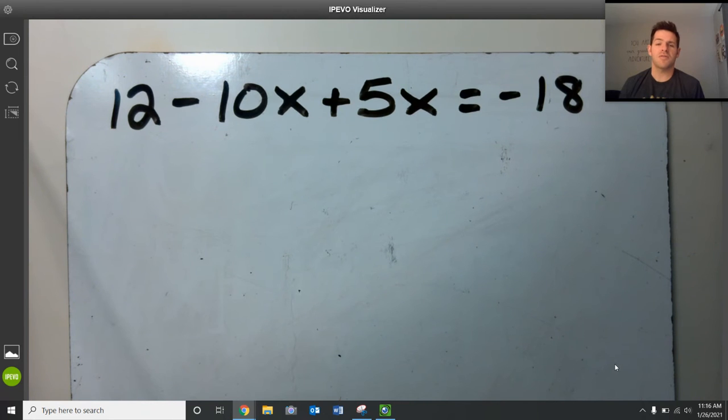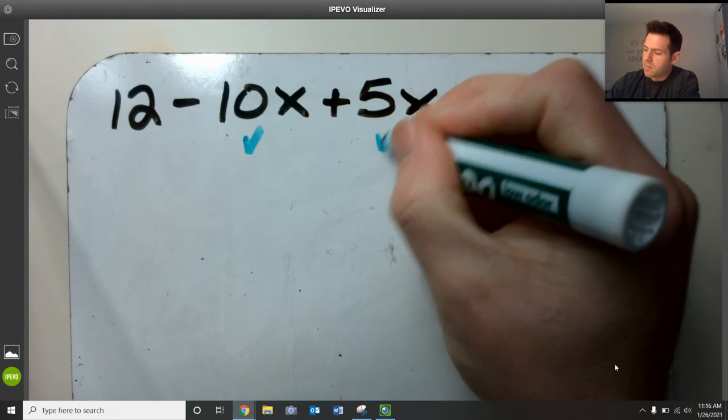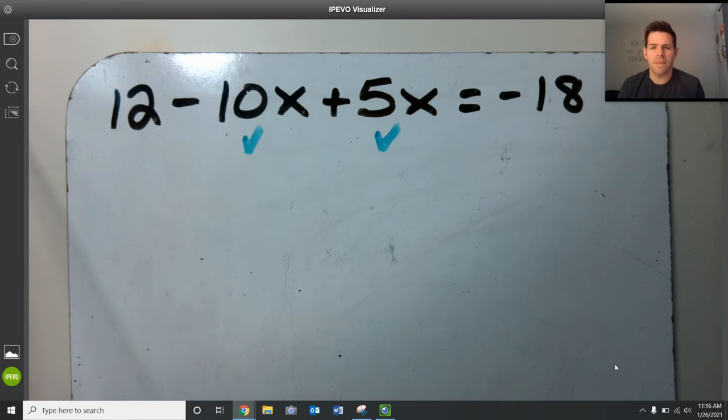I have 12 minus 10x plus 5x, and if you might notice here, we have two terms: a negative 10x and a positive 5x on the same exact side with one another. So because I have those two terms there on that side, I'm going to do the process of combining like terms.